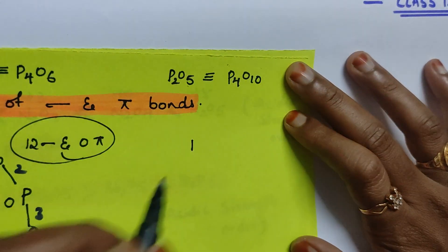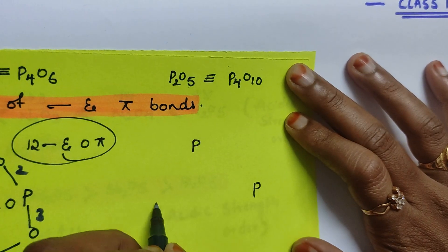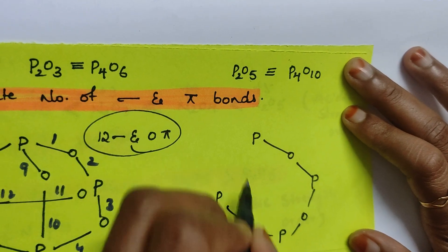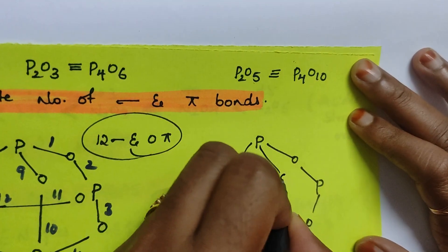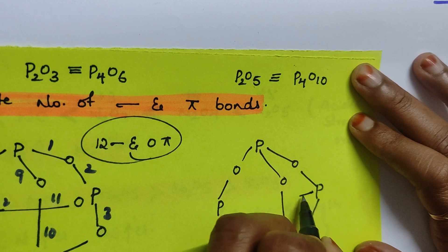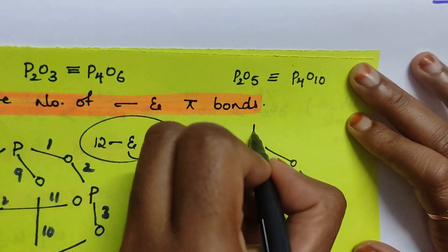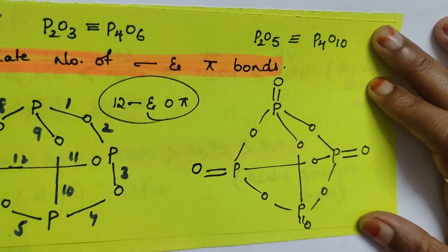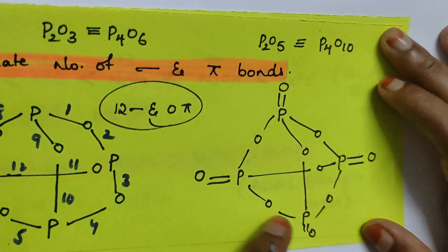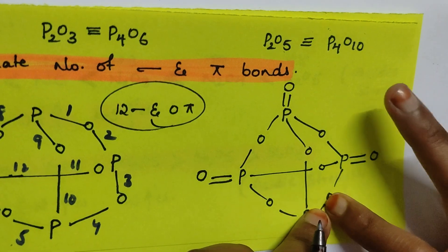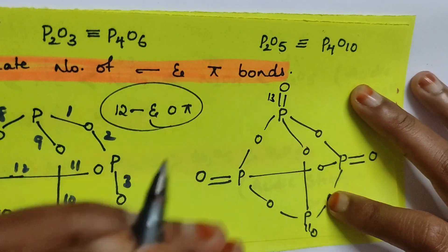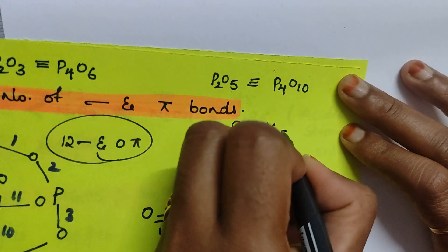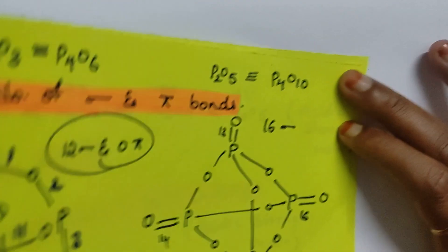When they ask us to draw the structure of P4O10, you draw the same base structure as P4O6, and then add a double bond oxygen on each phosphorus. So you have 12 sigma bonds already, plus 13, 14, 15, 16 — 16 sigma bonds total. And how many pi bonds? 4 pi bonds.